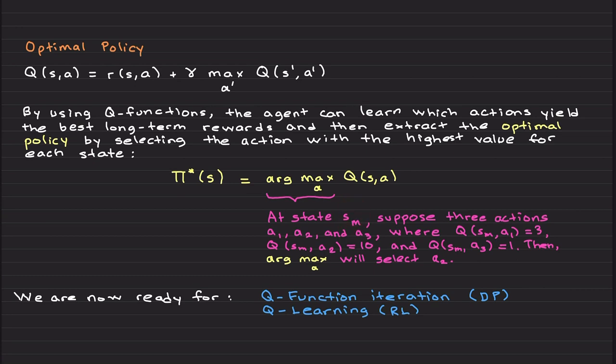Suppose there are three actions again, a1, a2, and a3. And let's say on that state, value of a1 is 3, value of a2 is 10, and value of sm with a3 is 1. Then argument max a selects action a2.